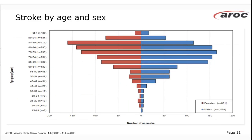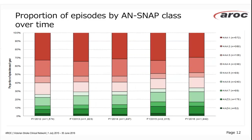Looking at stroke episodes in Victoria by age and sex, they tend to be very elderly — the bulk of patients are in the 75 to 90 age group — and slightly more males than females. The ANSNAP class mix over time, with 4AA1 being the least disabled group and dark green at the bottom being very functionally disabled, shows that the case mix across all those different ANSNAP classes has remained quite stable over time.